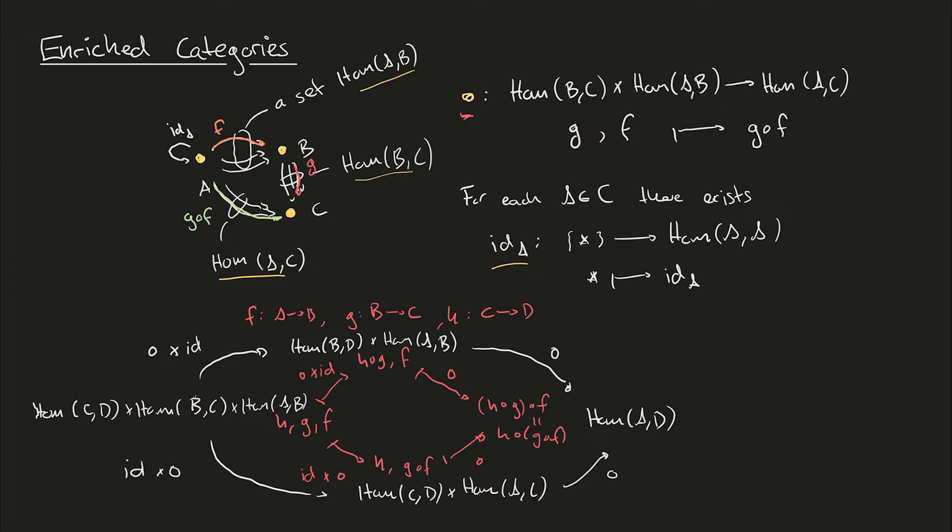If we now stipulate that this diagram of hom sets and composition maps commutes, what we're implicitly doing is saying that for all triples of maps going from a to b, b to c, and c to d, we want their composition in the two different ways to be the same. So we're requiring associativity for all triples of maps between these four objects.